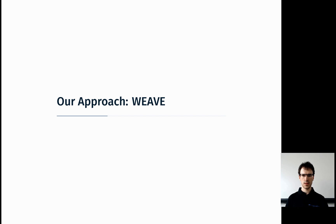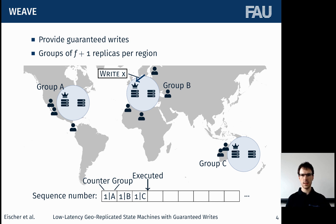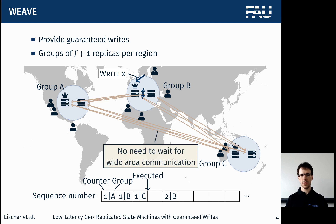Our solution to these challenges is called Weave, and it works basically by placing groups of F+1 replicas in each region, which are then able to provide guaranteed writes to the client without having to wait for wide-area communication. The client sends its request to its local leader replica and then runs an agreement protocol as usual, but we don't have to wait for wide-area communication before we can send the guarantee back to the client. So this works a lot more quickly.